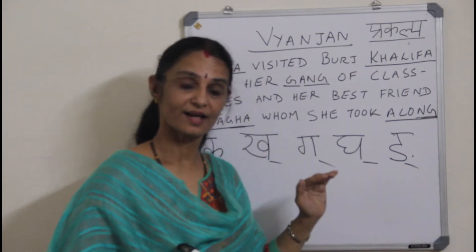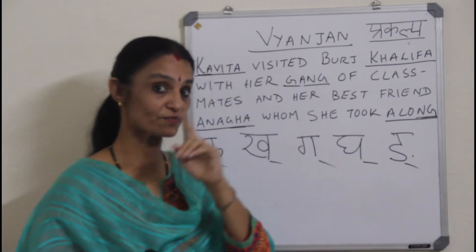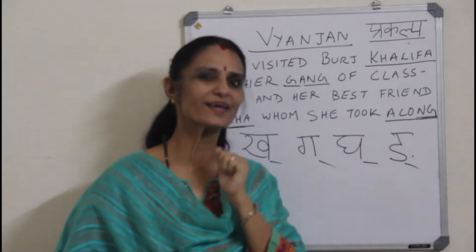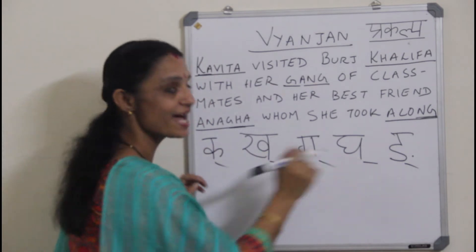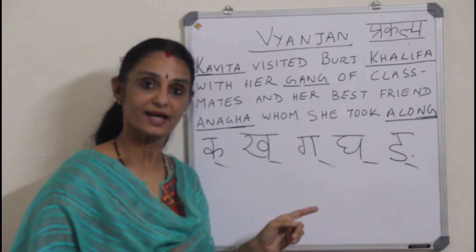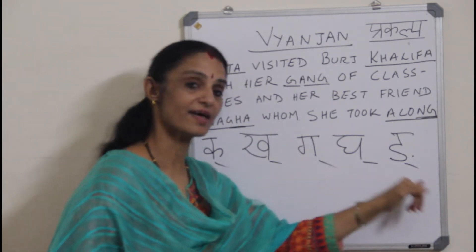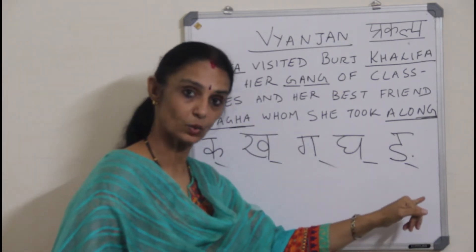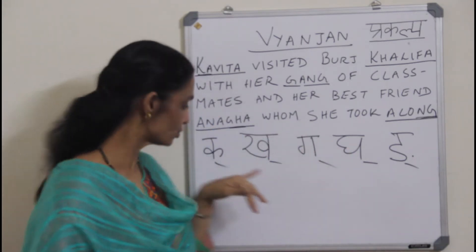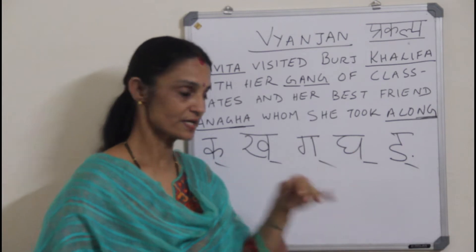Now these Vyanjan are like elderly people. They need the help of Swar to function. Without the help of Swar they need a walking stick, and these small lines are that walking stick — they are called Halan. Every time we write a Vyanjan we need to put these Halan below them. How the Swar help the Vyanjan and how these Halan vanish, we will be learning in the next videos.